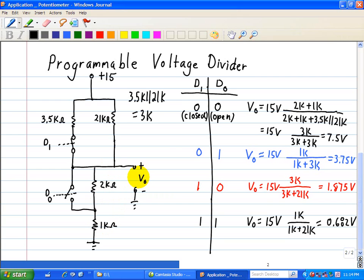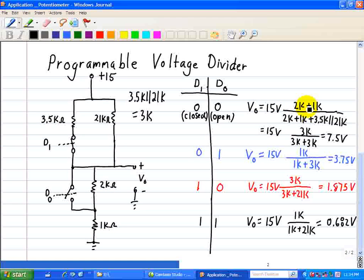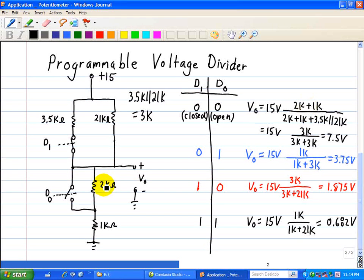So let's do a voltage divider. What we have is our input voltage of 15 volts. Our output voltage consists of resistors 2k and 1k over the 2k and 1k in parallel with this combination, which we saw was 3k.